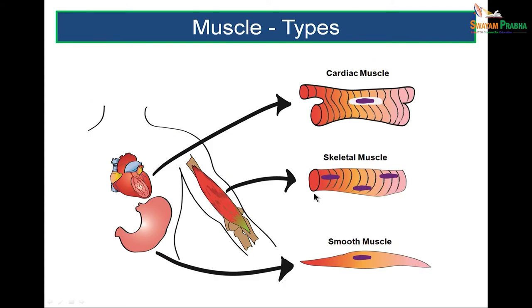We could classify muscles into different types. As seen in this figure, skeletal muscle forms muscles of the skeleton of the body. There is cardiac muscle found in the heart, and smooth muscle found in the gastrointestinal tract.